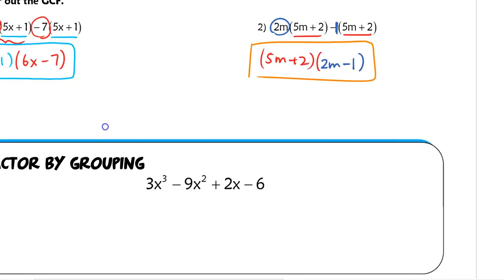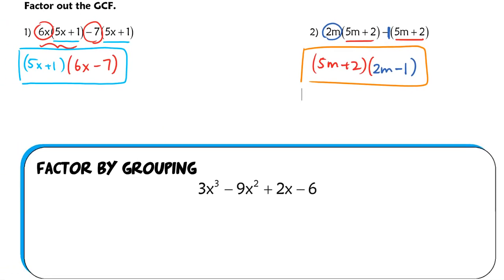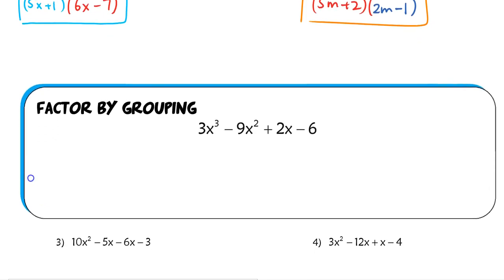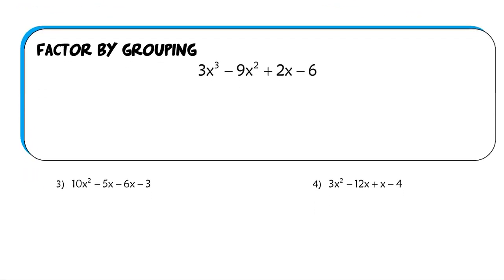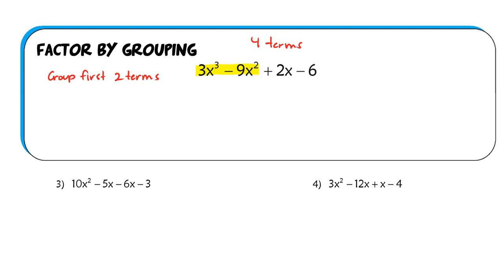I started with those two review problems because it's similar to what we'll see when we factor by grouping. When you factor by grouping, we've got four terms — we're always going to see four terms. You're going to group the first two terms together. In this case those are 3x cubed and negative 9x squared, and we take out the GCF. The GCF between 3x cubed and negative 9x squared is 3x squared — that's what they both have in common, the greatest common factor.